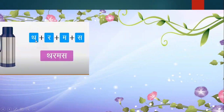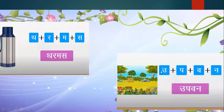Next word is Thermos — Th-R-M-A-S. See the picture of the thermos. Yes, thermos. Next word — you can see the picture: it means garden. As you can see the picture, it is a garden — you can see flowers and trees. That is a garden.